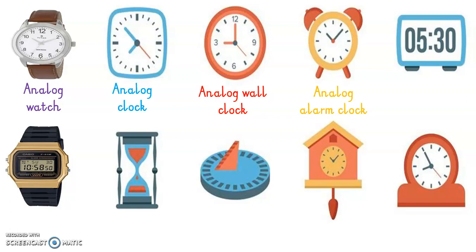This is an analog alarm clock. A lot of people have one of these next to their bed to wake them up in the mornings. This is a digital alarm clock — it has numbers instead of two hands to show us the time. The black watch is a digital watch; it tells us time by numbers digitally, where the watch above it has hands that go around.